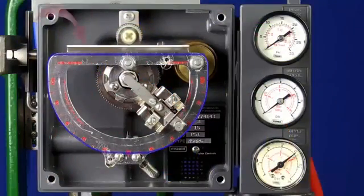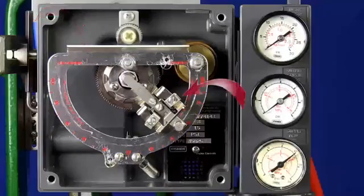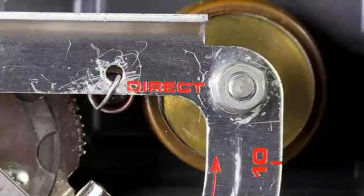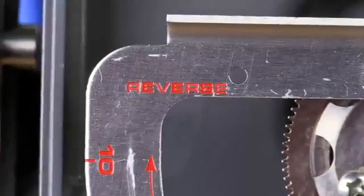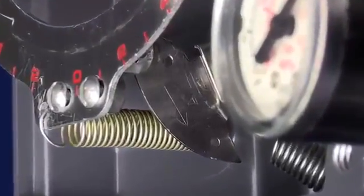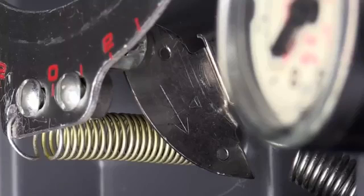So let's first identify the components of the positioner that we'll be working with. The D-shaped beam here is the summing beam and is the component this flapper assembly moves around on. Notice the summing beam is labeled direct over here and reverse over here. The cam, which is attached to the rotary shaft feedback arm, is behind the summing beam down here at the bottom.